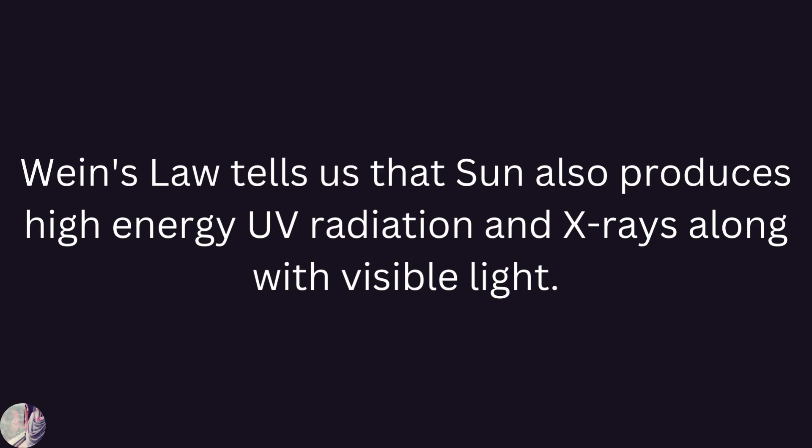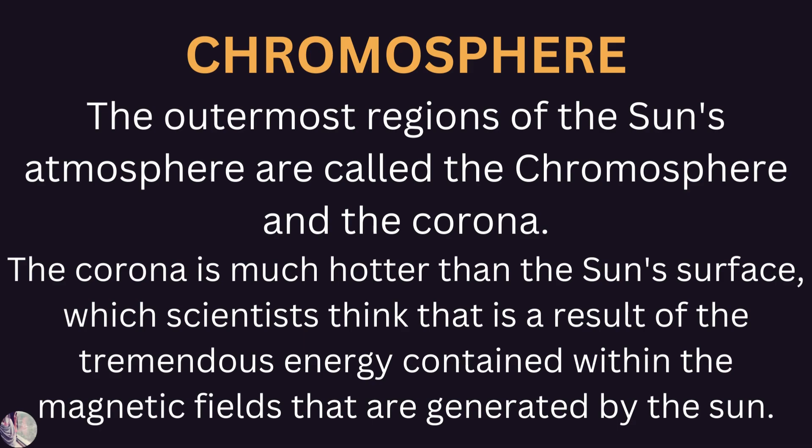Wien's law tells us that the sun also produces high-energy ultraviolet radiation and X-ray radiation along with visible light. Chromosphere — the outermost regions of the sun's atmosphere are called the chromosphere and the corona. The corona is much hotter than the sun's surface, which scientists think is a result of the tremendous energy contained within the magnetic fields that are generated by the sun.